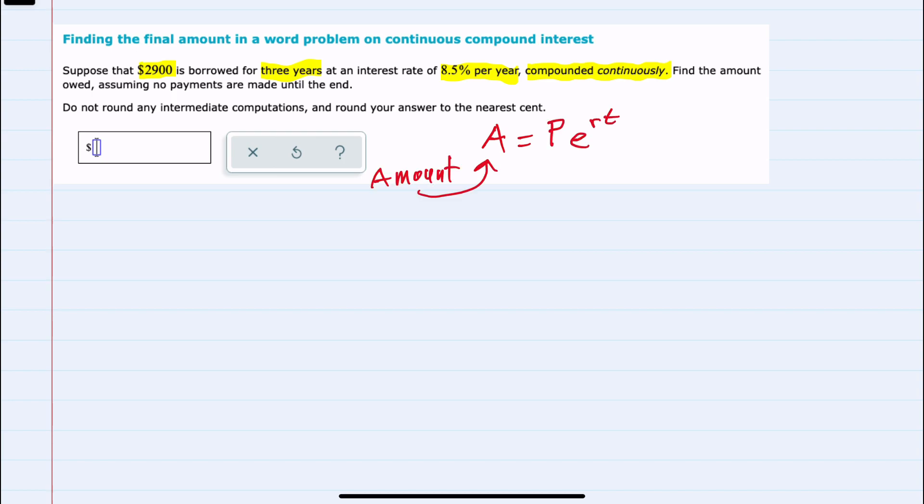Here, A equals the amount after compounding. P is the principal that we are starting off with. R is the rate as a decimal, and T is our time.